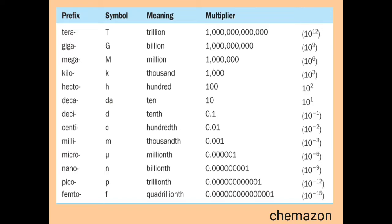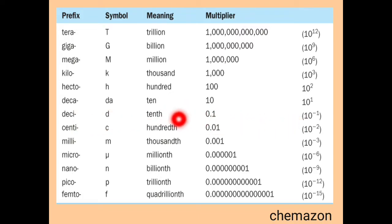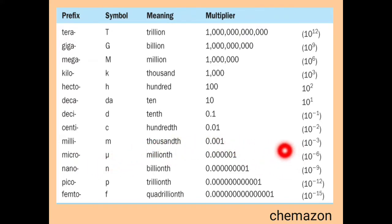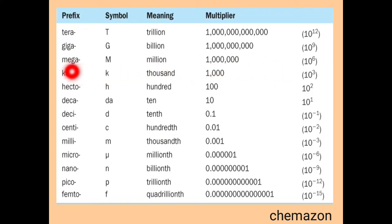Here in this table you can see the smallest units like Pico, Femto, Nano and the biggest units like Mega, Giga, Tera. The basic units are: Deci which is 10 raised to minus 1, Centi is 10 raised to minus 2, Milli is 10 raised to minus 3, Micro is 10 raised to minus 6, Nano is 10 raised to minus 9, Pico is 10 raised to minus 12, and Femto is 10 raised to minus 15. Moving to higher units: Kilo is 10 raised to 3, Mega is 10 raised to 6, Giga is 10 raised to 9, and Tera is 10 raised to 12.